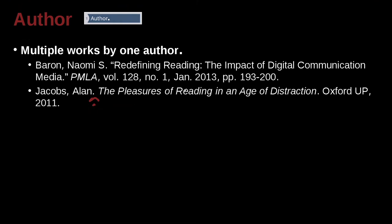Then, 'The Pleasures of Reading in an Age of Distraction' — this is a book. How do we know it's a book? Because we're not using quotation marks and it is italicized — written at the angle — which means it's the same as underlined. That means it's the title of a book. So here we're just citing the whole book, not one chapter or one part of the book.